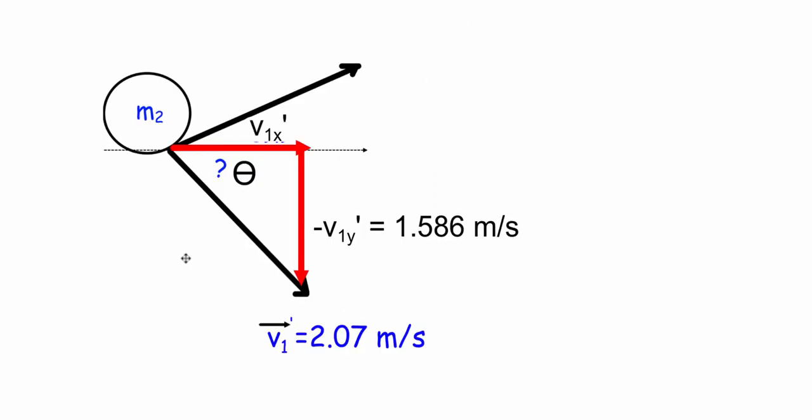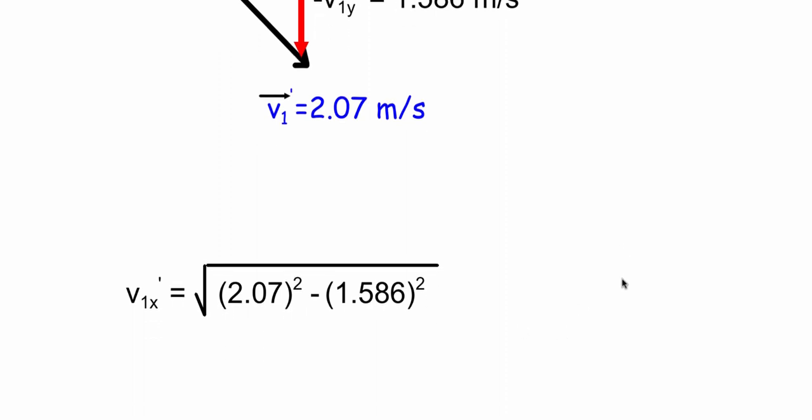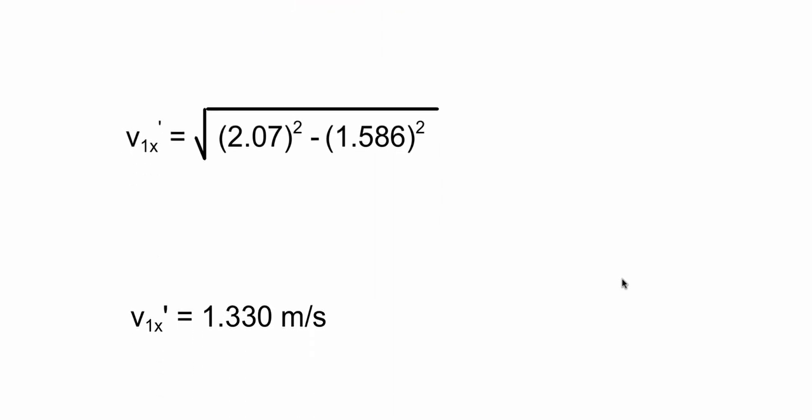Okay, so this is just our right-angle triangle. Hypotenuse is 2.07 meters per second, which is solved for v1y', which is 1.586. Let's use Pythagorean theorem. v1x' is the square root of 2.07 squared minus 1.586 squared, which gives us 1.330 meters per second.